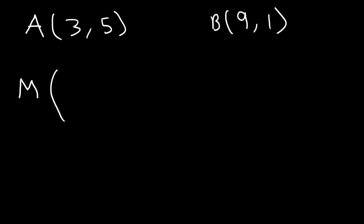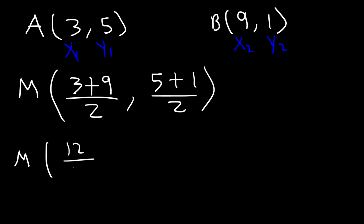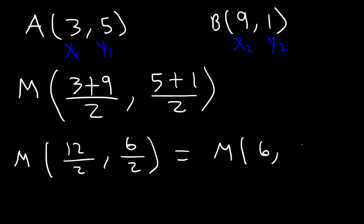Let's use the same formula. We're going to call this x1 and this y1; this is x2 and y2. So it's x1 plus x2 — that's 3 plus 9 — divided by 2, which gives us the x-coordinate of the midpoint. To find the y-coordinate, it's y1 (which is 5) plus y2 (which is 1), divided by 2. Now 3 plus 9 is 12, and 5 plus 1 is 6. 12 divided by 2 is 6; 6 divided by 2 is 3.